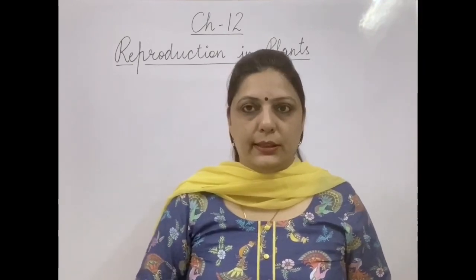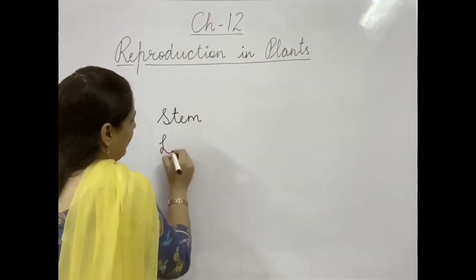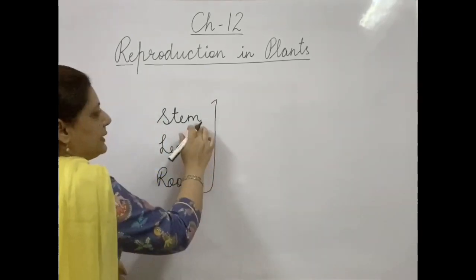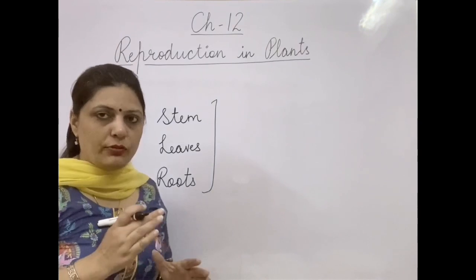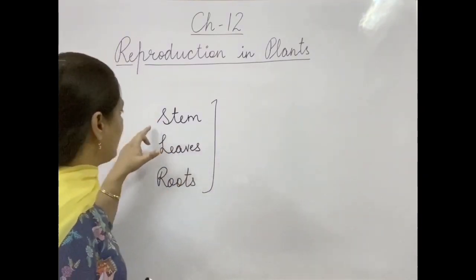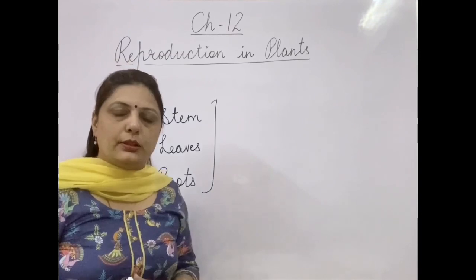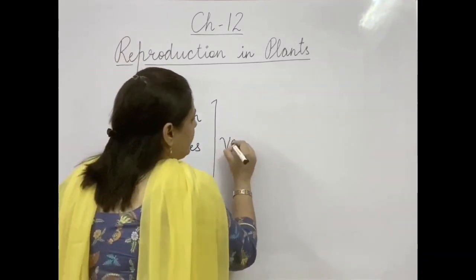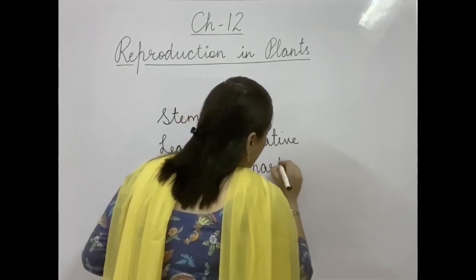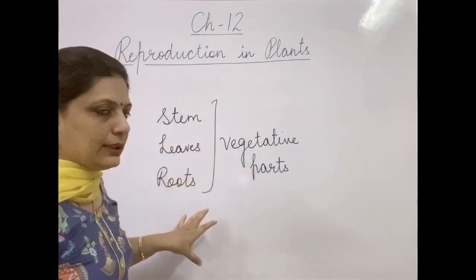Let us discuss the main parts of a plant. Each plant has a stem, leaves, and roots. The stem helps in transportation of materials, including food produced in the leaves — a two-way street, as we read in class 6. Leaves are essential for photosynthesis, and roots hold the plant and absorb water and minerals from the soil. These are considered the vegetative parts of a plant — the parts not involved in producing seeds.